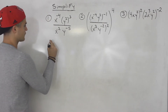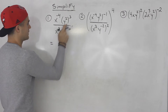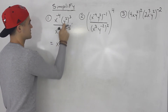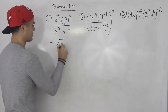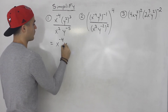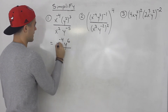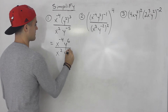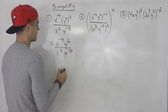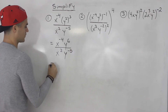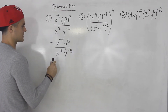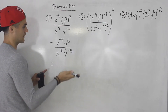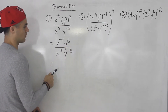First thing I'm going to do is simplify this numerator. Notice the two and the three — we can multiply those, so we'd have y to the sixth, and then everything else I'm just going to rewrite as is. Now what I'm going to do is take any negative exponents in this fraction and flip them over.